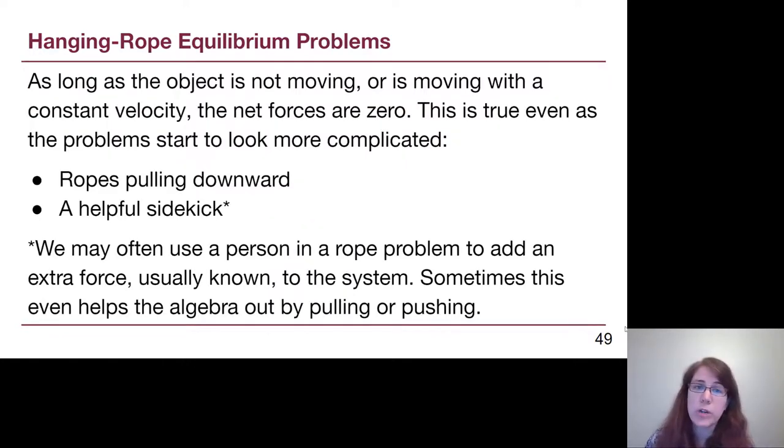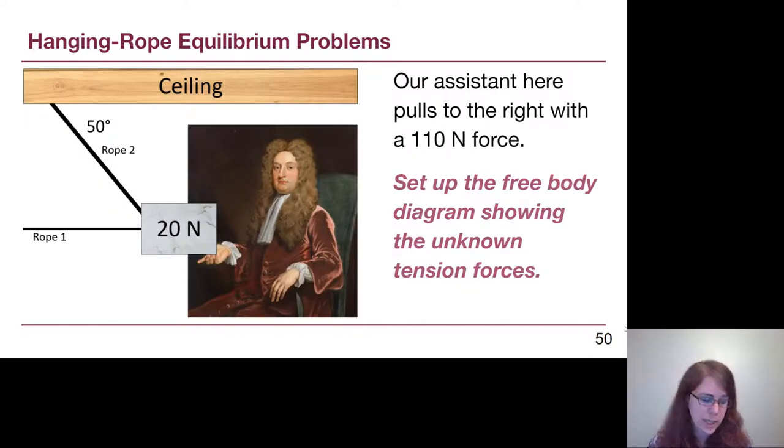The last couple of things I want to note here is, for these types of problems, as long as the object is not moving, the net force is going to be zero, so we will see these kinds of situations where sometimes there is a rope or two that is pulling down at an angle, we still deal with it in the same way. Or there is a known push or pull in the problem, often indicated by a helpful sidekick that is holding on to the object for us, that is a known force in the system. Oftentimes, this even helps the algebra out a little bit based on how it's then able to have the box or thing being held.